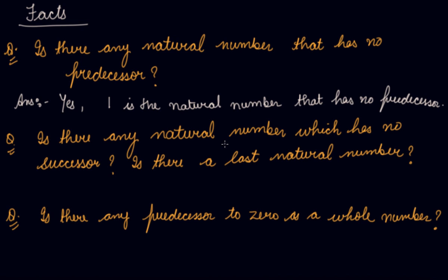Because before 1, there is nothing in the natural numbers. But if I talk about the whole numbers, before 1 there is the predecessor which is 0. So, in natural numbers, 1 does not have any predecessor. The second question is: is there any natural number which has no successor?